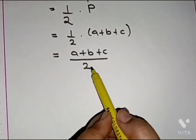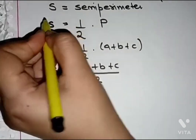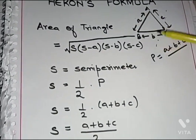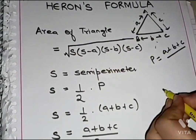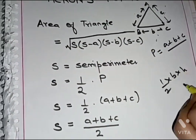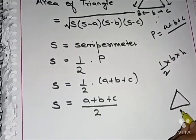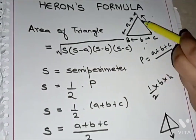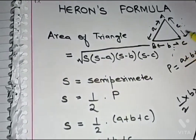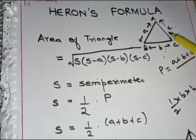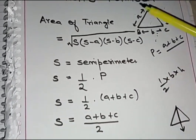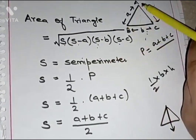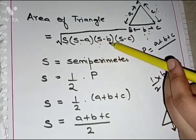The semi-perimeter is denoted by s. To find the area of any triangle whose three sides are given, we use Heron's formula. Unlike the formula Area = ½ × base × height — where base and height must be given — in Heron's formula only the three sides are needed. We put the semi-perimeter and the three side values at their respective places in the formula.